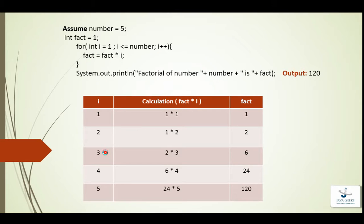In the next round, i will be 3. So fact was already 2, so fact multiplied by 3 will become 6, so 6 will be stored in fact variable.